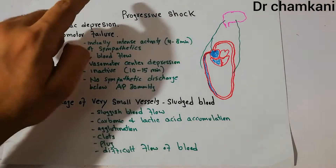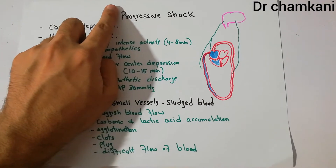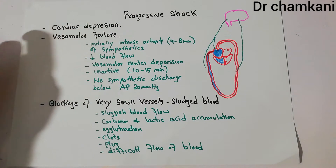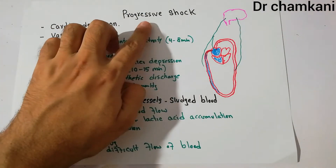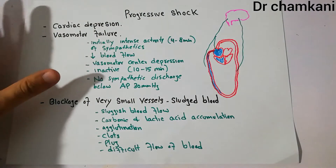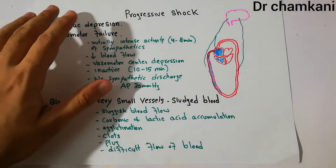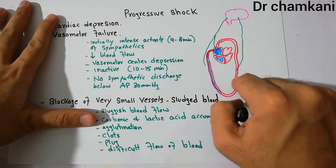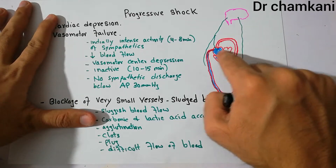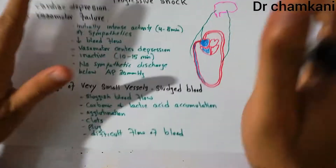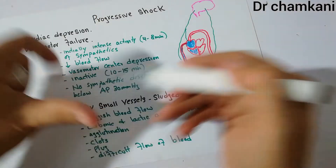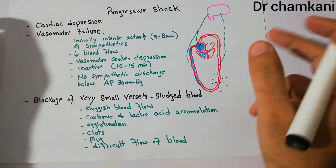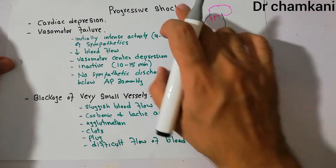In this lecture we will continue to discuss progressive shock and two more factors which basically convert non-progressive shock into progressive shock. Shock is a condition in which there is inadequate supply of blood to body tissues. The heart pumps blood into the body and body tissues utilize the blood and nutrients. If the amount of blood flowing to the tissues is inadequate due to any condition, it is labeled as shock.